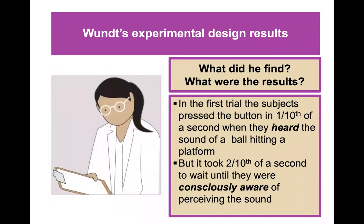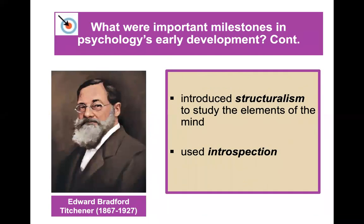What did Wundt find? In the first trial, subjects pressed the button in one-tenth of a second when they heard the sound of a ball hitting a platform, but it took two-tenths of a second when they had to wait until they were consciously aware of perceiving the sound. Wundt had a student, Edward Titchener, who brought his ideas across the Atlantic to the United States — believed to be at Cornell — and introduced the concept of structuralism, using a method called introspection.